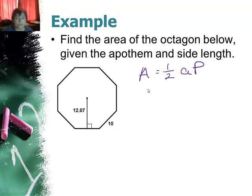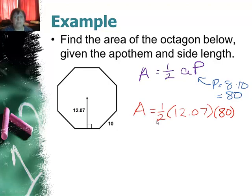Instead of finding the area of each triangle, I can say well it's 1 half times the apothem times the perimeter. Well I don't quite have the perimeter but that's pretty easy to find. It's 8 times 10 or 80. Substituting in I get area equals 1 half of the apothem 12.07 times 80 or 482.8 units square.